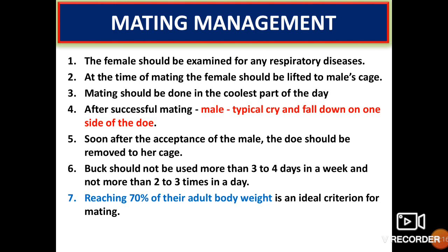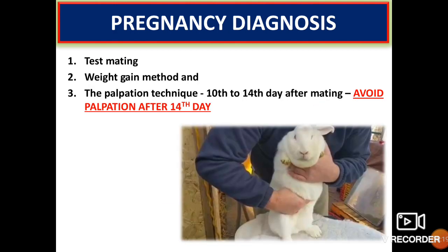Reaching 70% of their body weight is an ideal criterion for mating. For pregnancy diagnosis, there are 3 methods: test mating, weight gain method and palpation technique. Palpation is the most reliable method for determining pregnancy and should be done from 10 to 14 days after mating. Palpation after 14 days should be avoided to prevent abortion.